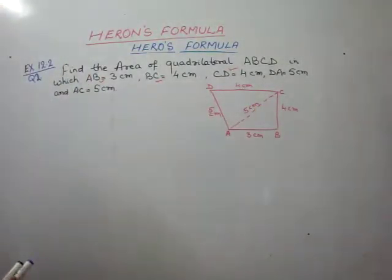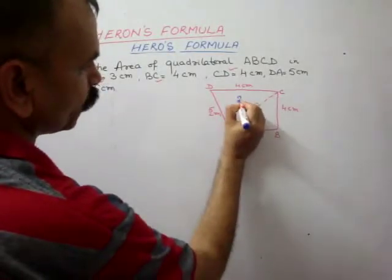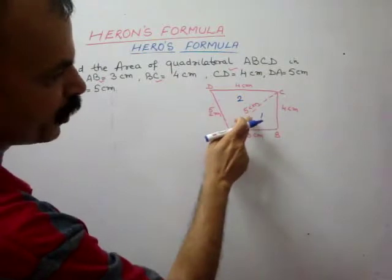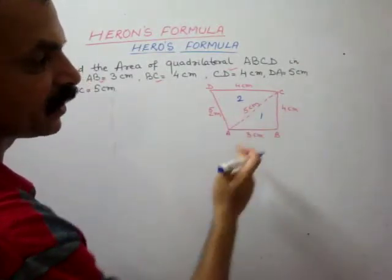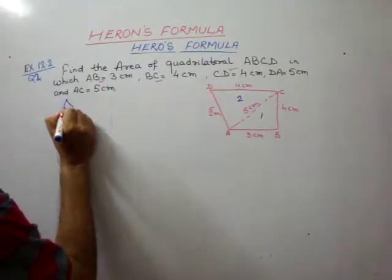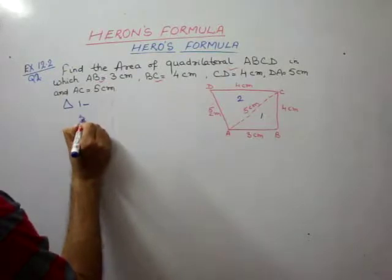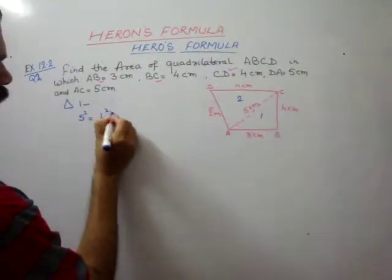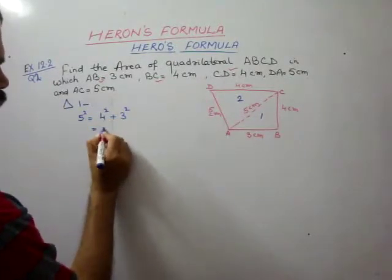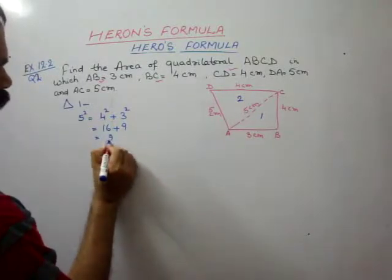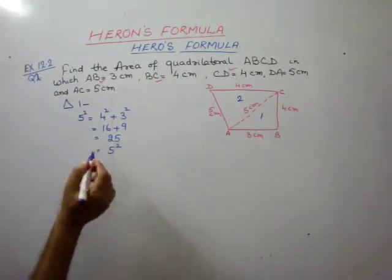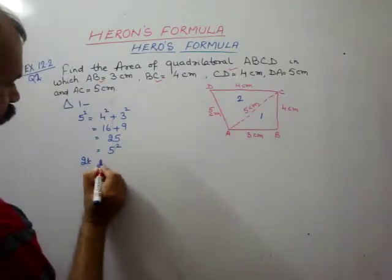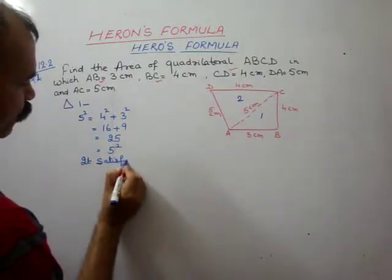So this is our 5 cm. If you can see, there are 2 triangles — Triangle 1 and Triangle 2. In Triangle 1, the sides are 3 and 4, and the hypotenuse is 5. This satisfies Pythagoras theorem: 5² = 4² + 3², that is 25 = 16 + 9 = 25. So it satisfies Pythagoras theorem.